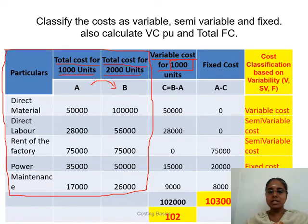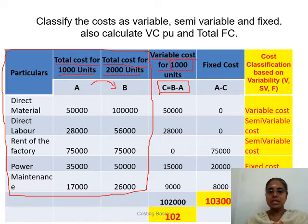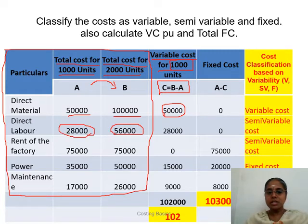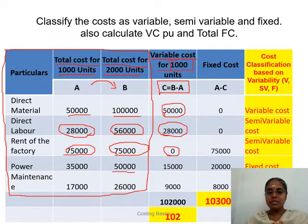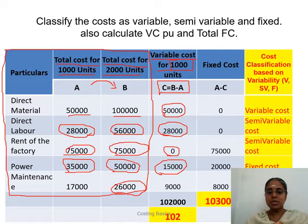Column A is total cost for 1,000 units and column C is the variable cost for 1,000 units. Total cost minus variable cost gives fixed cost. For direct material: total cost 50,000 minus variable cost 50,000 equals fixed cost 0. For direct labor: 28,000 minus 28,000 equals 0. For rent: 75,000 minus 0 equals fixed cost 75,000. For power: 35,000 minus 15,000 equals fixed component 20,000. For maintenance: 17,000 minus 9,000 equals fixed component 8,000.